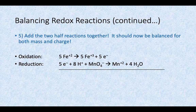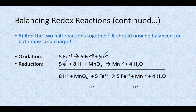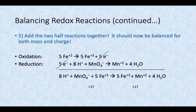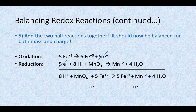Now we add the two half reactions together. The electrons cancel out, and here is our net overall reaction. It's already balanced for mass, and we can do a quick double-check for charge: on the left we have plus 8 from the hydrogen ions, minus 1 from the permanganate, and plus 10 from five Fe²⁺ ions, giving a total of plus 17. On the right we have five Fe³⁺ (plus 15), manganese 2+ (plus 2), and neutral water — also plus 17. So we're balanced for both mass and charge.